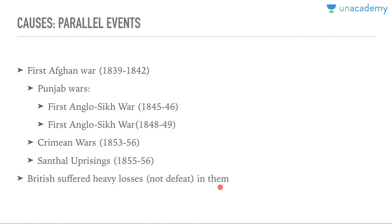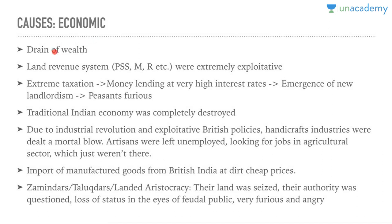Now the economic causes: drain of wealth theory, which everybody knows, was technically already happening. Land revenue systems — Permanent Settlement, Mahalwari, Ryotwari — were extremely exploitative. Extreme taxation led to moneylending at exorbitant interest rates. The emergence of new landlordism made peasants very furious. The traditional Indian economy was completely destroyed by the Industrial Revolution — raw materials were taken from India and cheap, low-quality machine-made finished goods were dumped into the Indian market, dealing a mortal blow to handicraft industries.